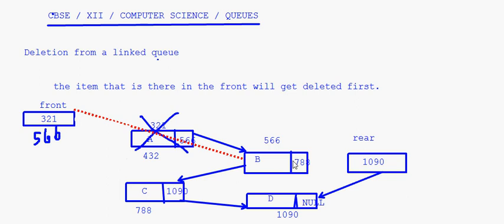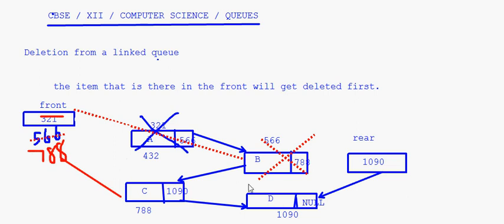If we want to delete another node, it will again be the first node — the node currently at the front. If I want to delete this node, its next is 788, so the next of the node being deleted gets rewritten into front. Front becomes 788, and it now points to the node at 788. Those two nodes are gone and their links are also gone.